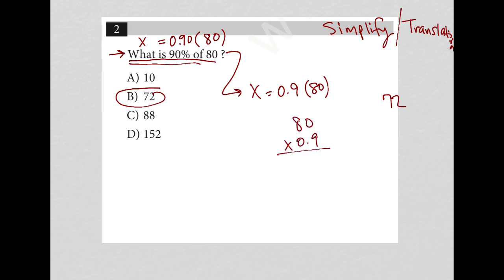80 times 0.9, 9 times 0 is 0, 9 times 8 is 72, 0 times 0, 0 times 8, which gives me 720. But, of course, this decimal place here has been moved to the left once. So, I'm going to move this to the left once. And that's why my correct answer here is 72.